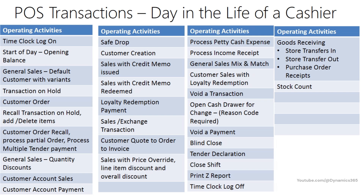Additional transactions include: sales with price override or discounts; processing petty cash expense at the store; processing income receipt at the store; performing general sales with mix and match; performing customer sales with loyalty redemption; voiding a transaction; voiding a payment; opening a cash drawer for change; creating a blind close; declaring tender; closing a shift; printing a zero report; and time clock log off.